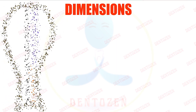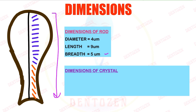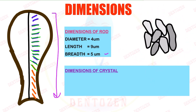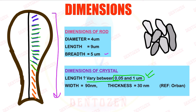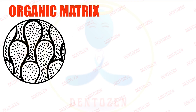The dimensions of the enamel rod: diameter is 4 micrometers, length is 9 micrometers, and breadth is 5 micrometers. For crystals, cutting a section parallel to the long axis is not straightforward since they are arranged in different directions, so there are doubts about length — it is estimated to vary between 0.05 and 1 micrometer. In cross section, the width is 60–90 nanometers and thickness is 25–30 nanometers. Details about crystal composition, shape, and ion arrangement are covered in the chemical properties of enamel video.